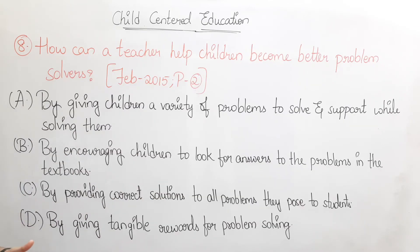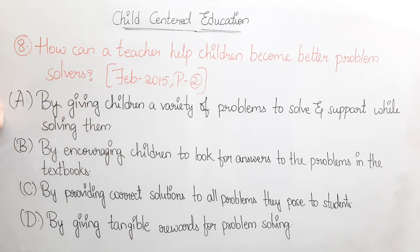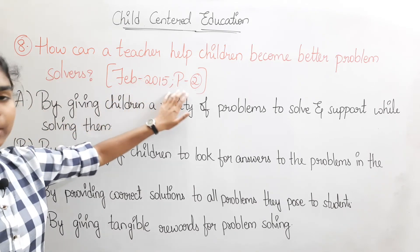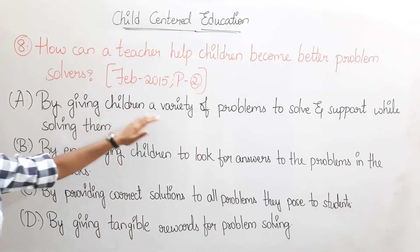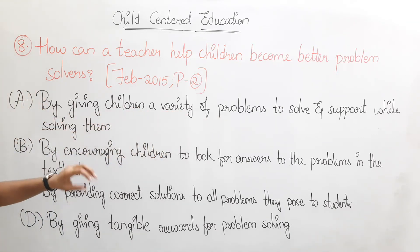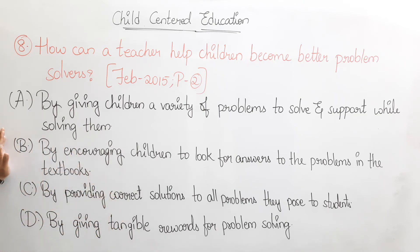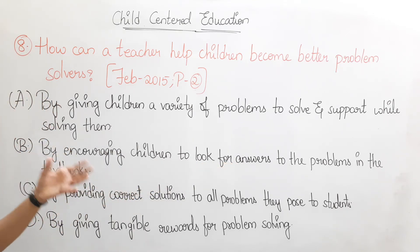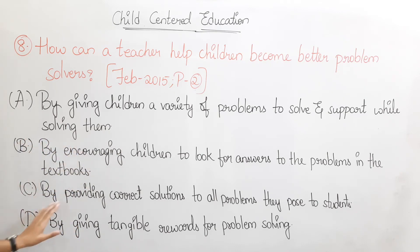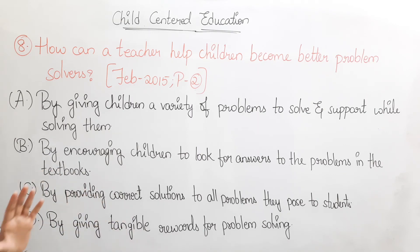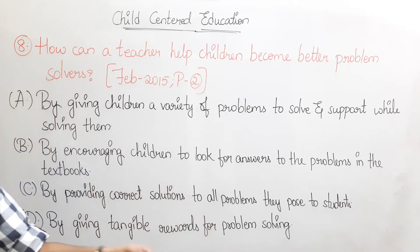The eighth question is: how can a teacher help children become better problem solvers? This is from February 2015, Paper 2. Option A: by giving children a variety of problems to solve and support while solving them. Option B: by encouraging children to look for answers in the textbooks. Option C: by providing correct solutions to all problems posed to students. Option D: by giving tangible rewards for problem solving.